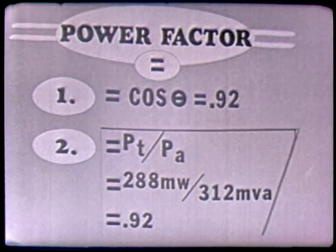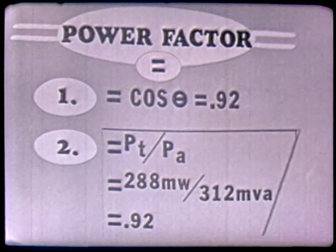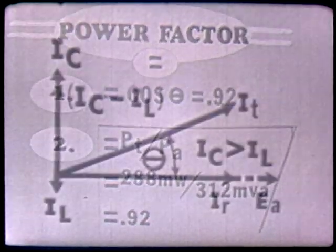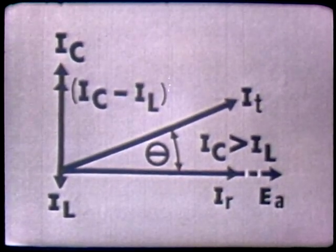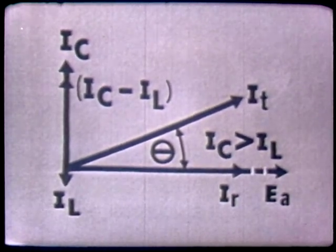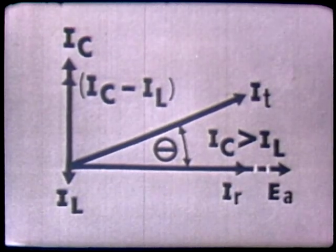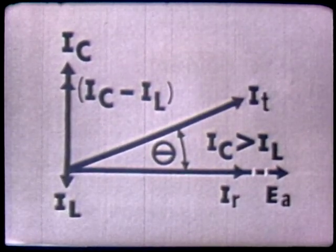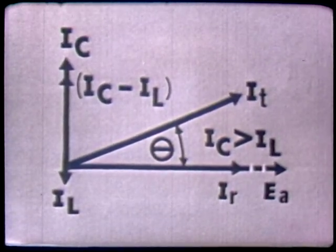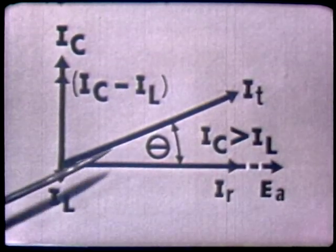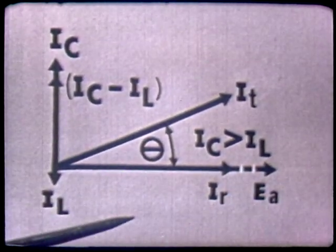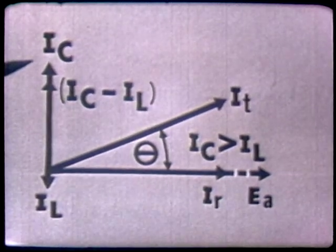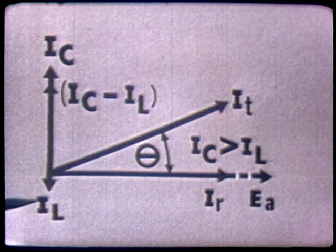In Formula 2, if you know any two quantities you can solve for the third unknown, similar to Ohm's Law. Throughout the lesson, I've used a circuit where IC is greater in magnitude than IL, meaning our total current leads our applied voltage — the circuit is acting capacitively because we have a leading phase angle. But if we wanted a lagging phase angle, IL would have to be greater in magnitude than IC.